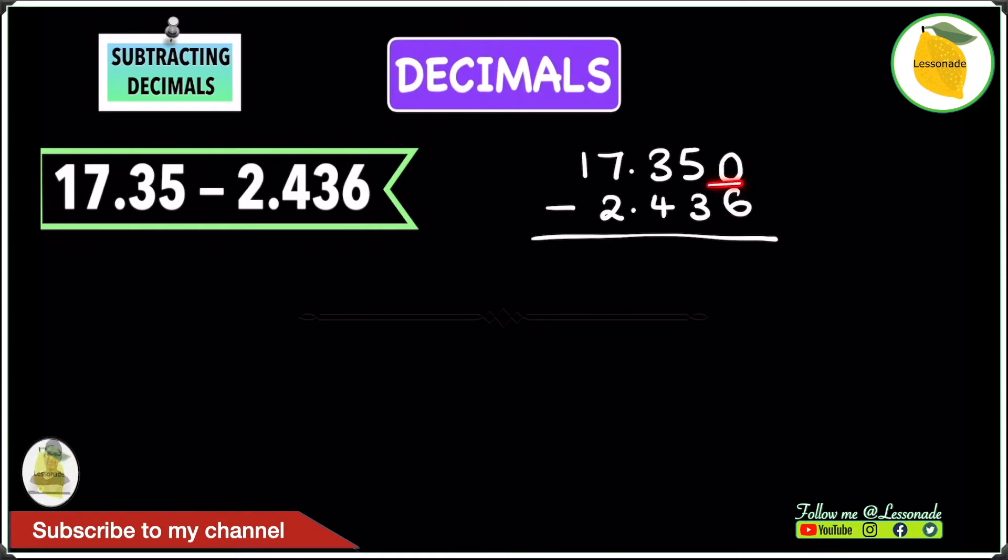Obviously we know that 0 is smaller than 6, so we can't do 0 minus 6. Instead we have to borrow a 1 from the 5. When you borrow a 1 from the 5, the 5 will become 4, and you add a 1 in front of the 0 to make it 10.